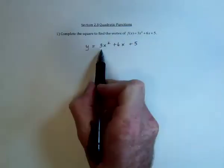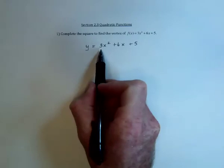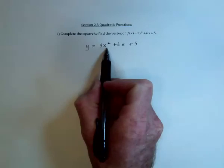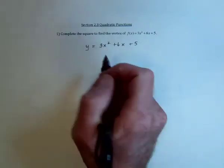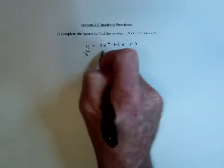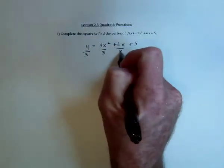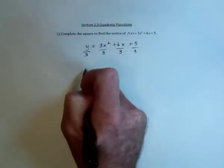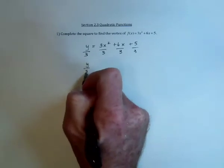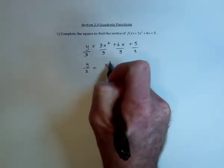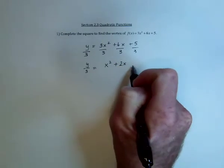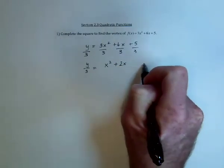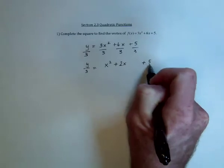The next thing to do is divide everything by 3. In order to complete the square, I need this to be just an x squared instead of a 3x squared. So divide both sides by 3, or divide every term by 3, and we've got y over 3 equals x squared plus 2x, and now leave a little bit of space right here, plus 5 thirds.